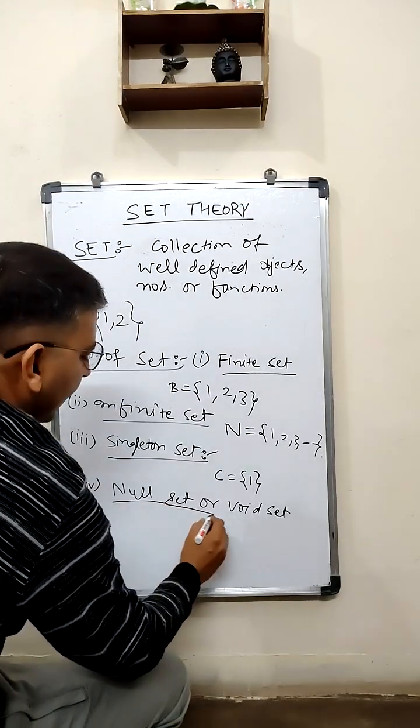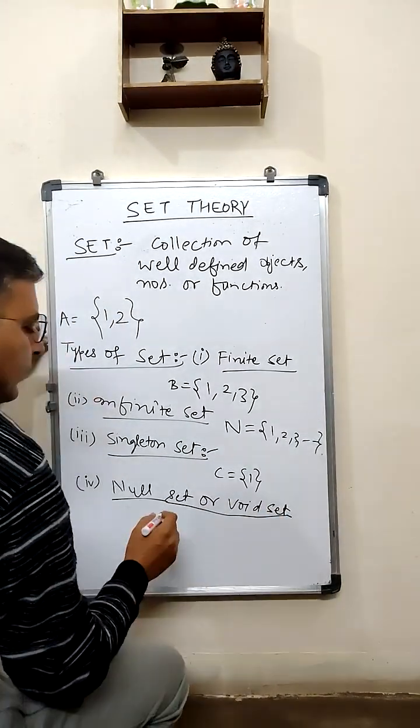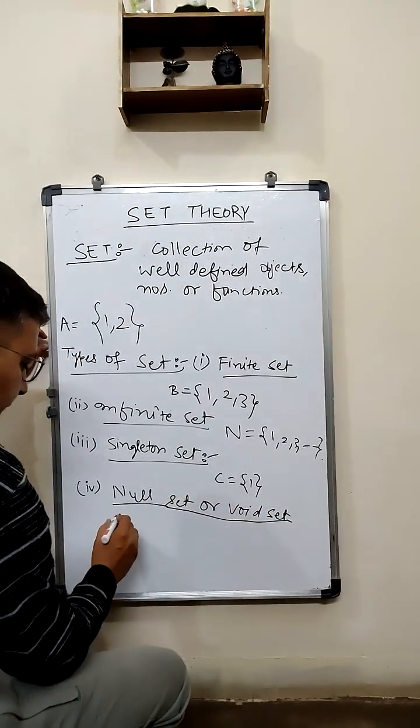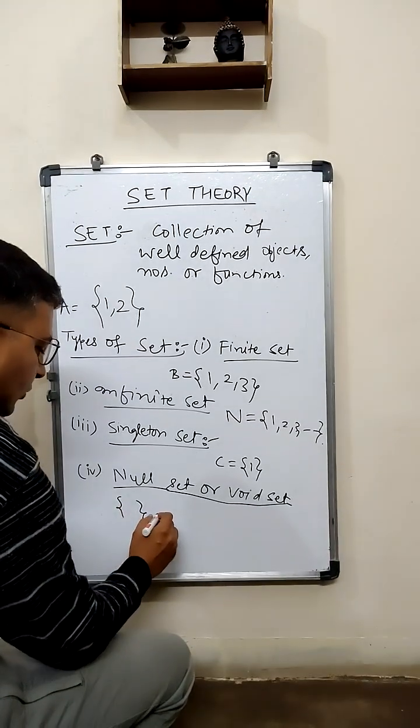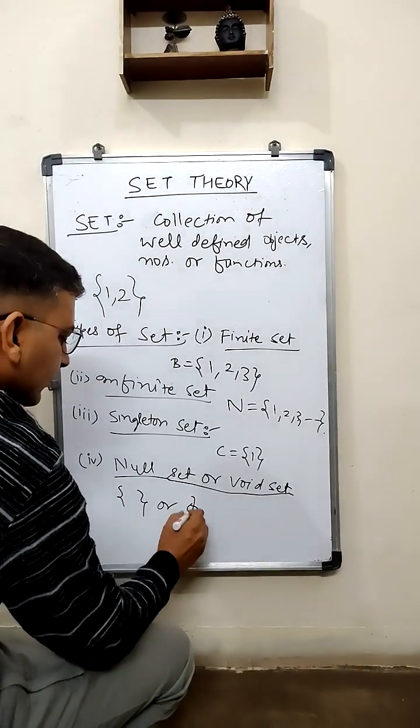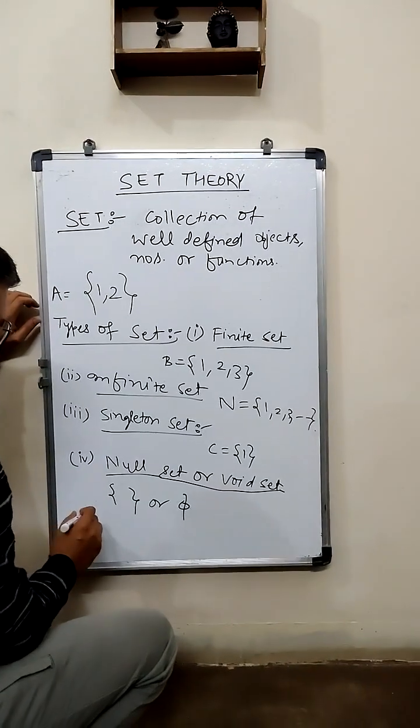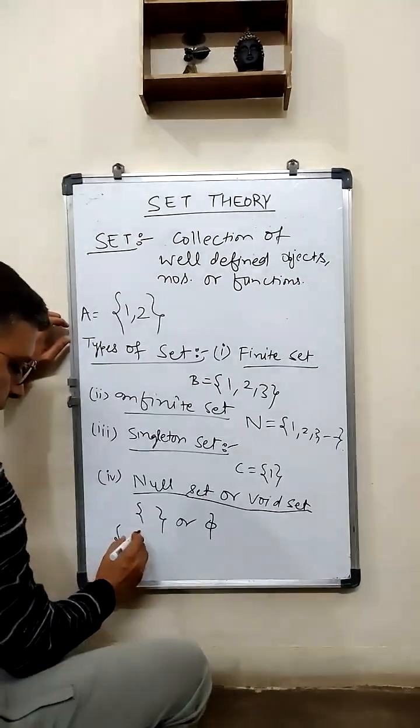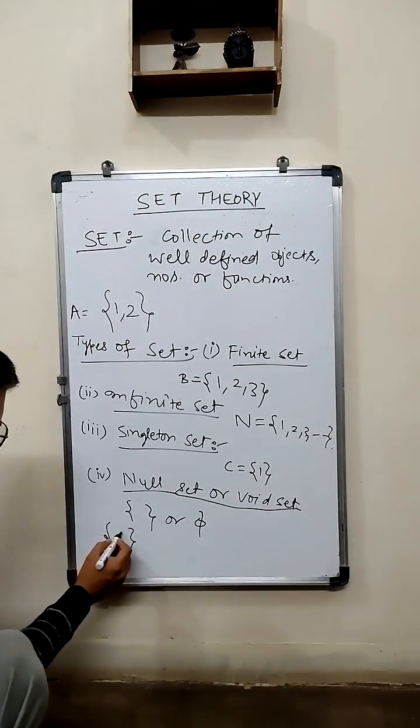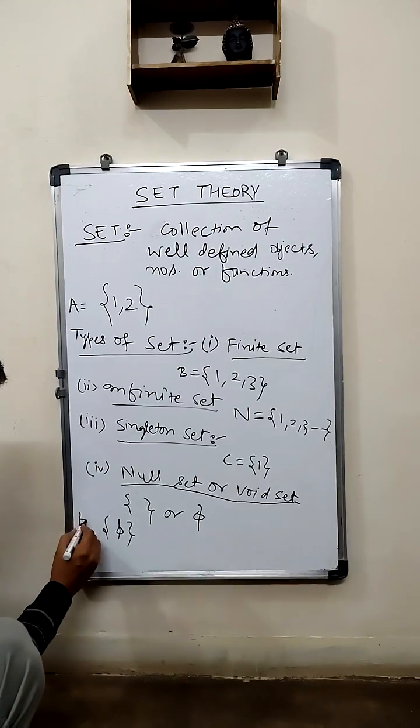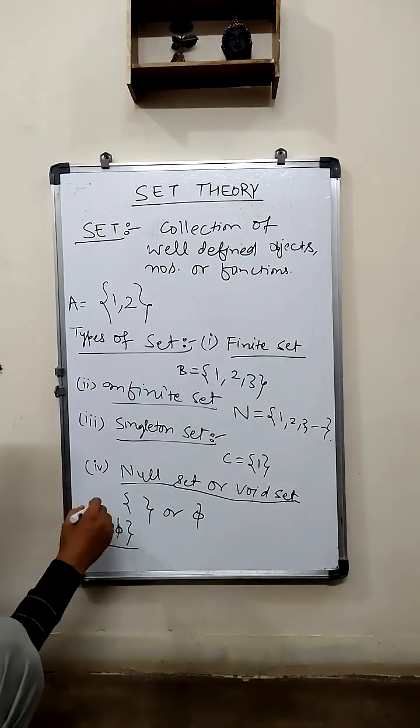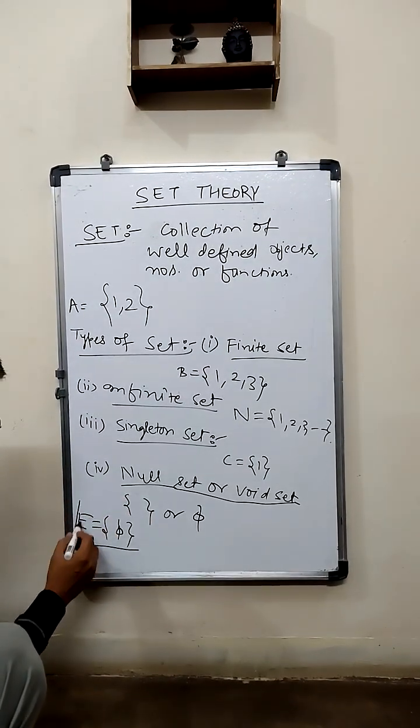As the name says, a set having no element is known as null set or void set. It is represented by {} or Ø. Now the question comes: please tell me whether, for example, E is equal to {Ø}. Whether E is a singleton set or it is not a singleton set.